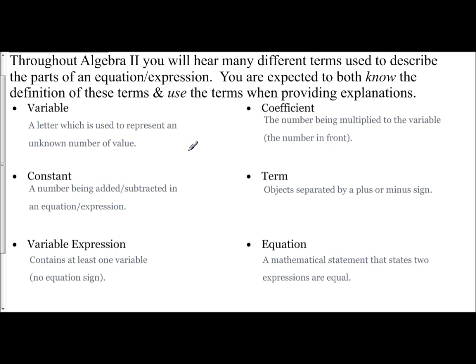If I were to write down a very basic expression, 3x plus 4, my variable is x, my coefficient is 3, my constant is 4. It's just the number being added or subtracted at the end.